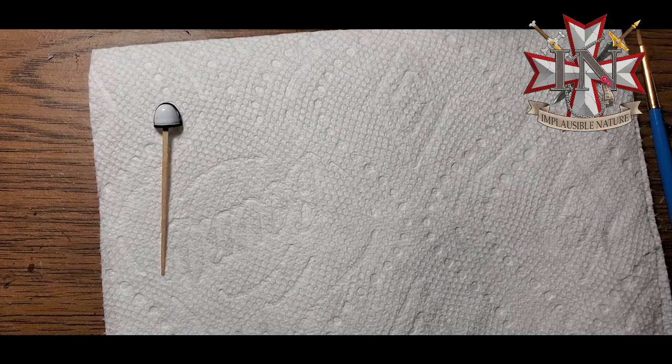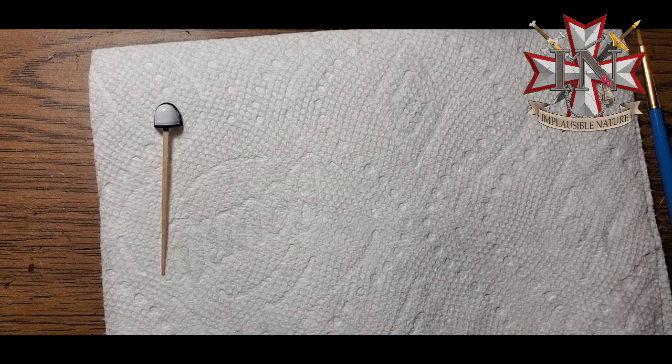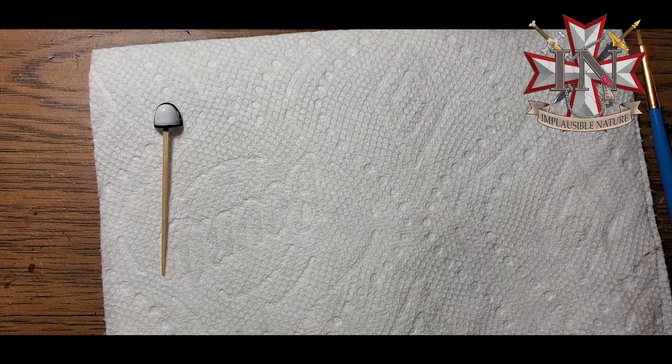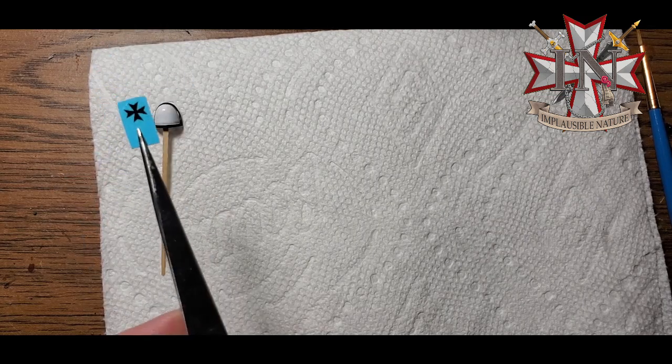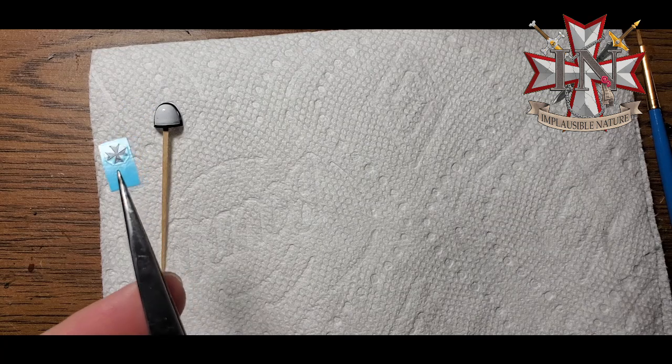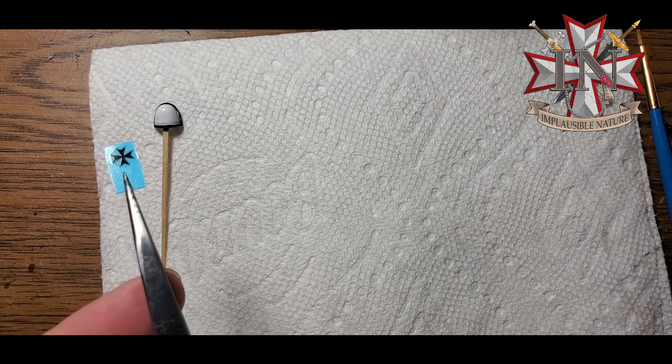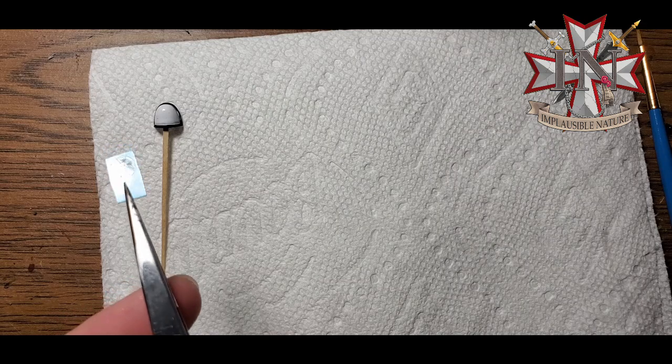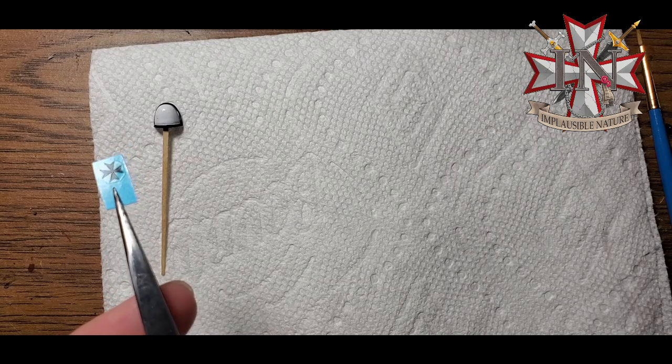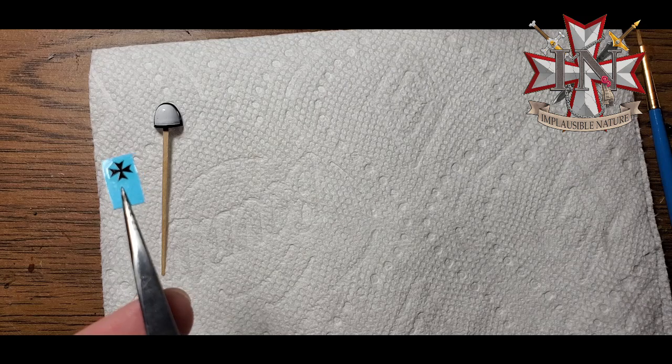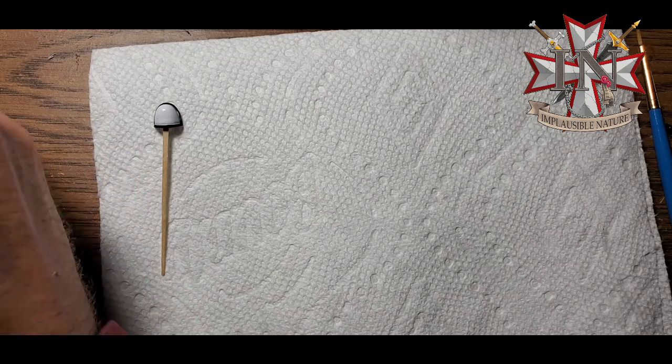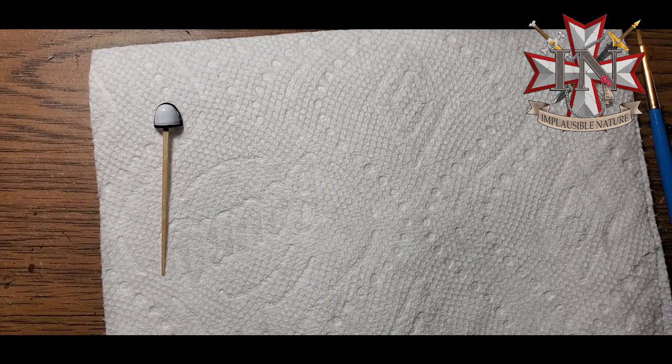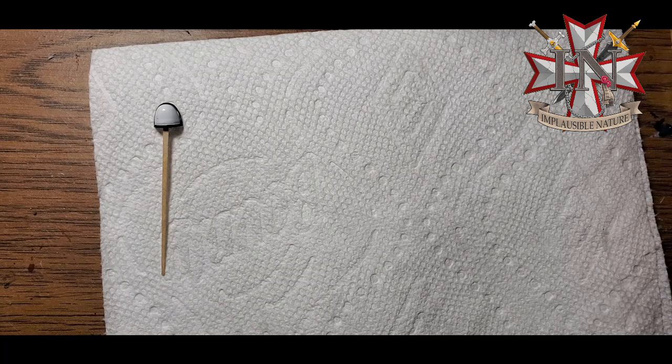All right, so now that our gloss varnish is dry, we're going to begin putting the decal on. I've got my decal all cut out here. You'll make sure that when you're using, especially if you're using locking tweezers, you want to hold it so that it's not touching the carrier film. Otherwise you won't be able to slide your decal off. I'm going to dip that in water and let that begin separating from the backing paper.